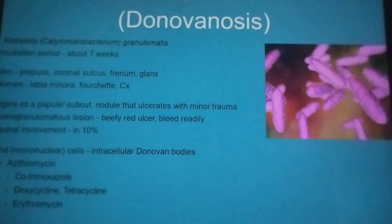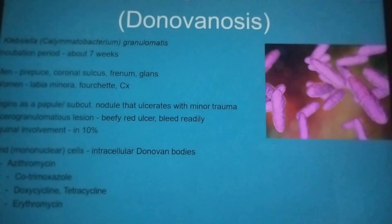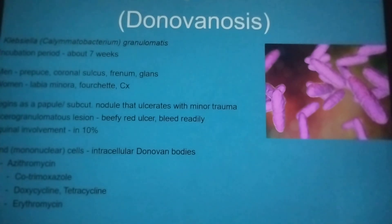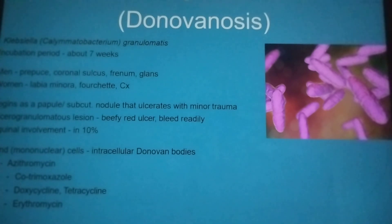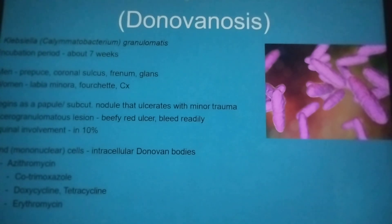Now we go to your Klebsiella granulomatis, which causes your donovanosis. Your Klebsiella, which is formerly named Calymmatobacterium granulomatis, has an incubation period of about 7 weeks. In the man, it causes infection in the prepuce, coronal sulcus, frenum, and the glans penis.